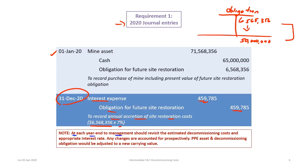At the end of each year, management should revisit the estimated decommissioning costs and the appropriate interest rate. When the mine was acquired, estimated costs were $50 million, but at year-end it may be discovered those estimates were too high or too low, requiring an adjustment to the obligation. The interest rate could also change from the assumed 7%. Any changes are accounted for prospectively — changes in estimates result in adjustments to the PPE asset and decommissioning obligation, with interest expense calculated on the revised balances in subsequent years.